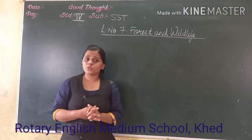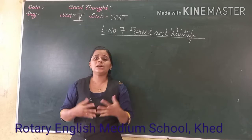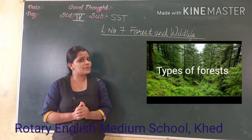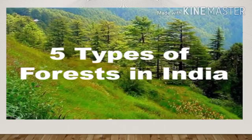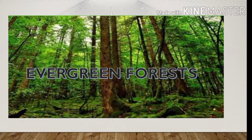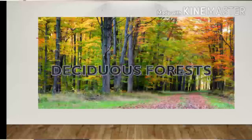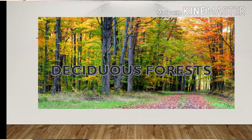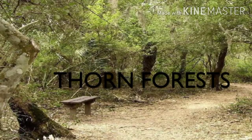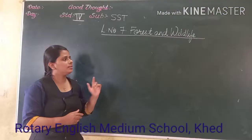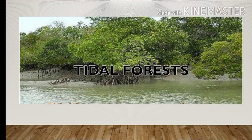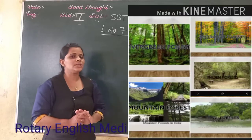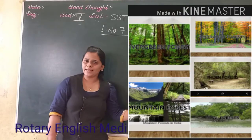Today we are going to discuss about the types of forest. In India, there are five types of forest: first, evergreen forest; second, deciduous forest; third, thorn forest; fourth, mountain forest; and fifth, tidal forest. We are going to discuss all five types of forests one by one.